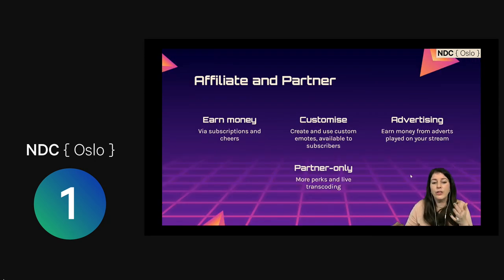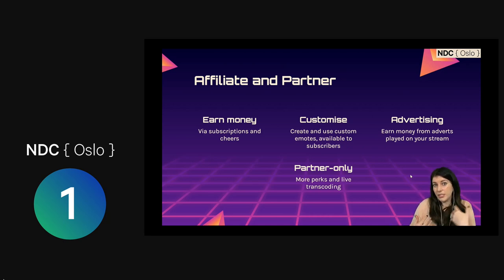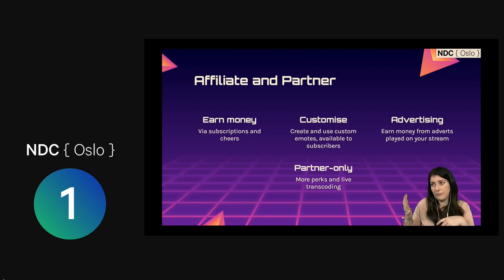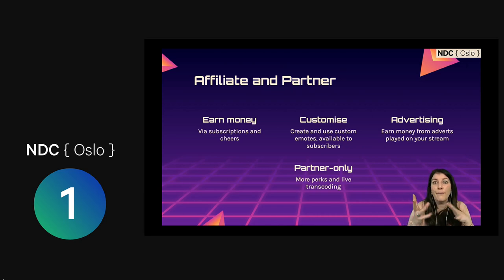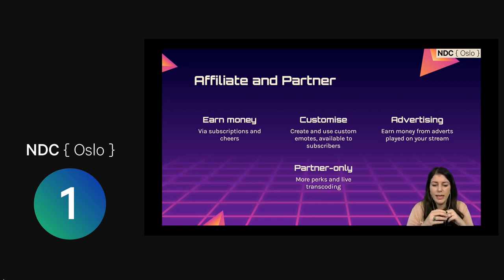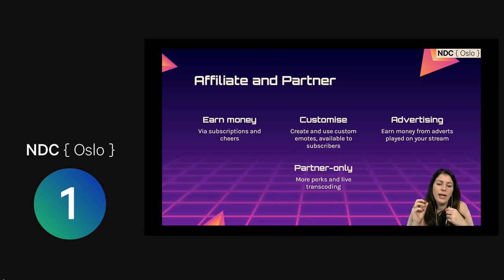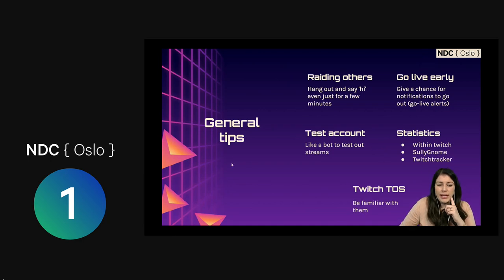Affiliate and partner — this is how you earn money. You have to meet certain requirements to become an affiliate. I'm just an affiliate. If you want to hit partner, you have to have an average viewership of 75 people over 30 days and stream on so many days — it's quite a hard thing, and you definitely don't need it. Affiliate allows you to earn money, customize emotes, rewards, and all sorts of things. You do earn money from advertising. Partner-only perks include more bonuses and live transcoding.